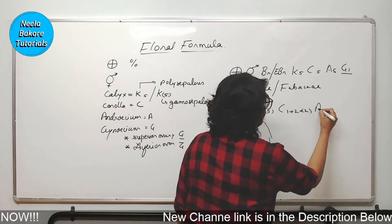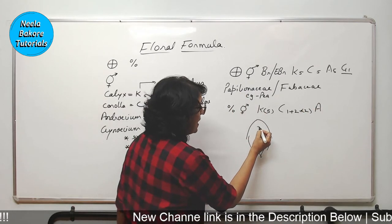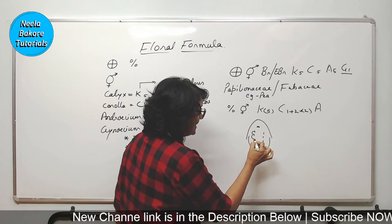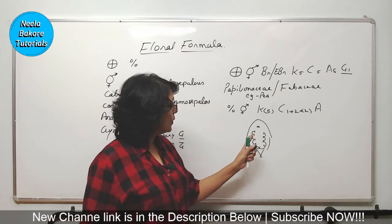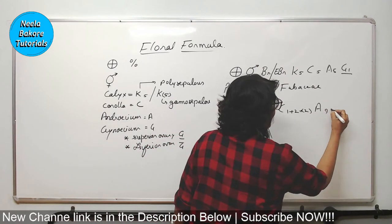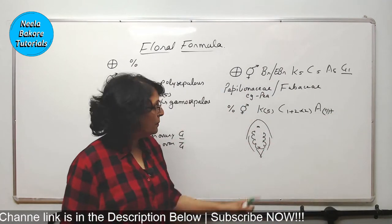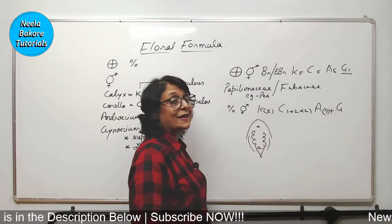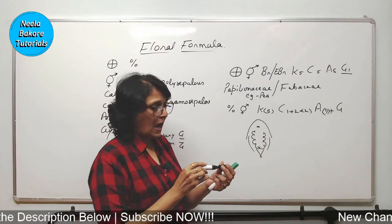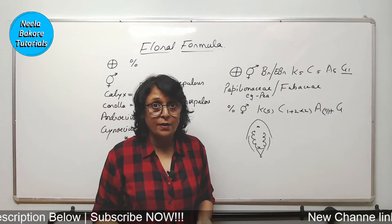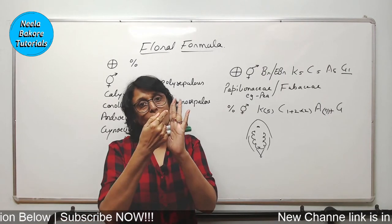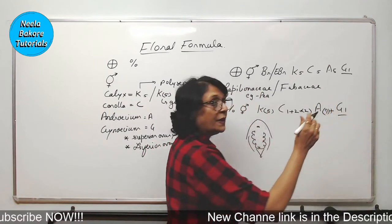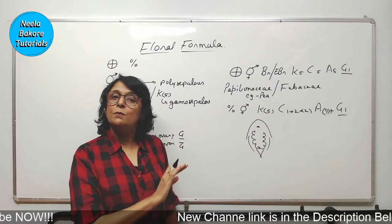Let us come to androecium. Here the stamens are: one, two, three, four, five, six, seven, eight, and nine — nine are fused — and one is separate. So we write it as nine in bracket plus one. This condition is known as diadelphous condition, where the stamens fuse to form two bundles — one bundle of nine and one separate. In the center there is the gynoecium: single carpel. You have all seen a peapod — when you open it, all seeds are in one compartment, so it is unilocular ovary. It is one and it is superior.